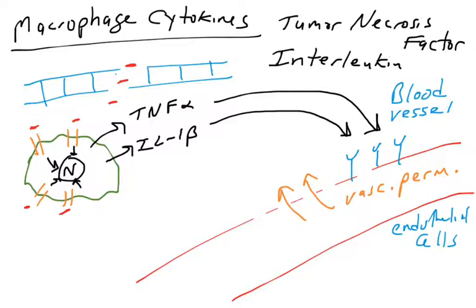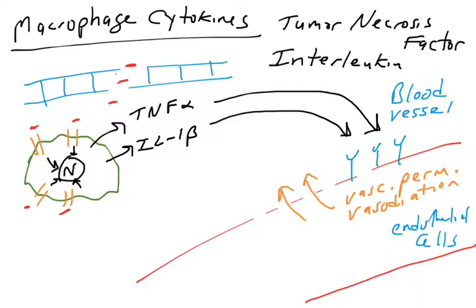Cytokines can also trigger vasodilation — increasing the diameter of the blood vessel — so more blood, proteins, and cells come to the site. The classic signs of inflammation — tumor, rubor, calor, dolor — are all triggered by cytokines such as TNF-alpha and IL-1-beta.